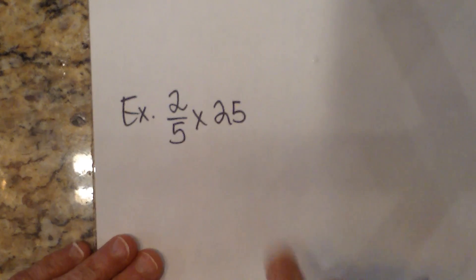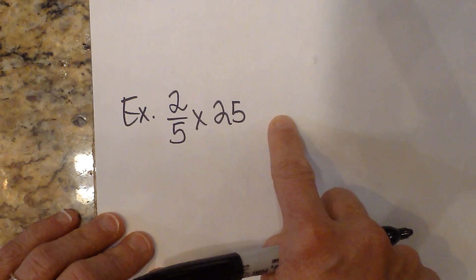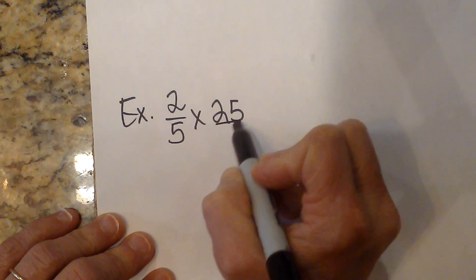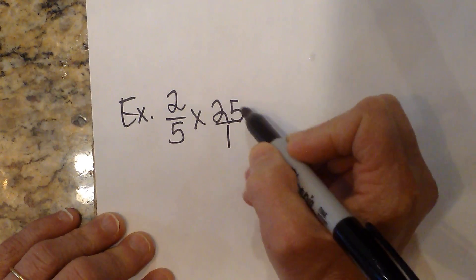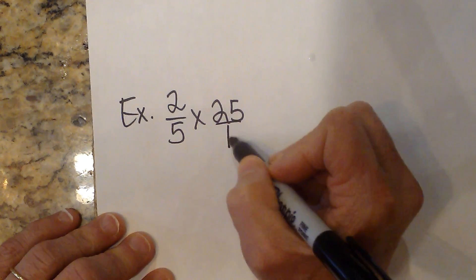So now let's look at one where we have a fraction times a whole number. We're going to do the exact same thing, only we're going to put the whole number over 1, because a whole number divided by 1 is just itself. So to make it into a fraction, we just draw 1 underneath.